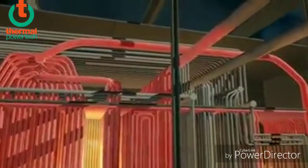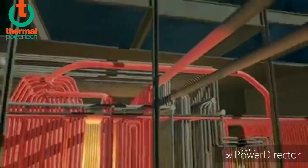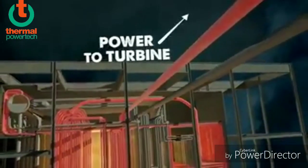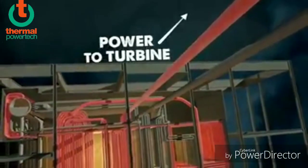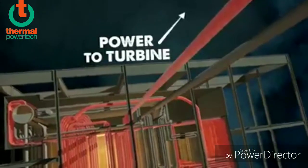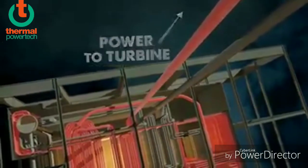This dry, superheated steam then exits the boiler, passing through a steam header and ultimately providing power to the steam turbine, which generates electricity.